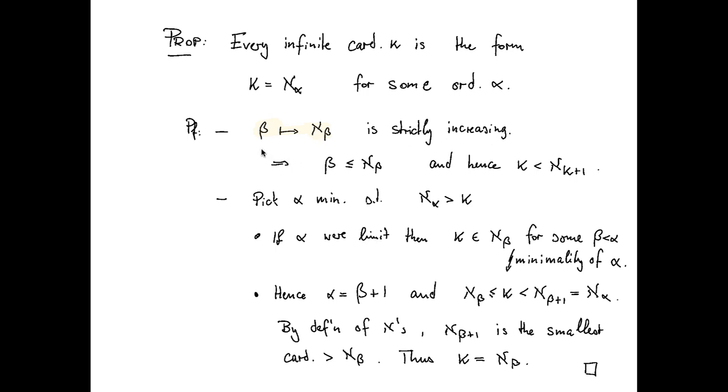It's a map from ordinals to ordinals, so we've seen before that this implies that beta is actually less than or equal to the image of the map of beta under this mapping. So in this case, it would be aleph sub beta, and therefore it easily follows that kappa is less than aleph sub kappa plus one. So we definitely know that there is an element of the aleph hierarchy that's greater than our given infinite cardinal kappa.